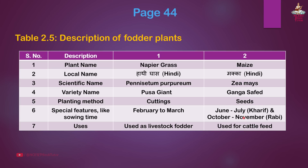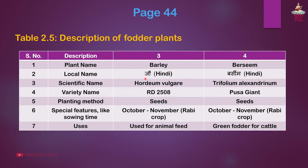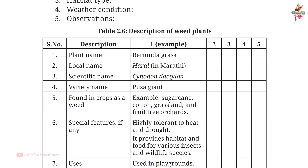First fodder plant: Napier grass. Special features: Kharif season June–July and Rabi season October–November. Uses: Used for cattle feed. Second: Barley. Local name: Jau in Hindi. Scientific name: Hordeum vulgare. Variety: RD2508. Planting method: Seeds. Special features: October–November Rabi crop. Uses: Used for animal feed. Third: Barseem. Local name: Barseem in Hindi. Scientific name: Trifolium alexandrinum. Variety: Pusa Giant. Planting method: Seeds. Special features: October–November Rabi crop. Uses: Green fodder for cattle.